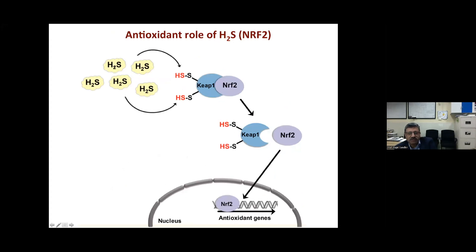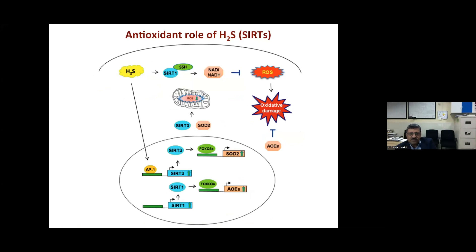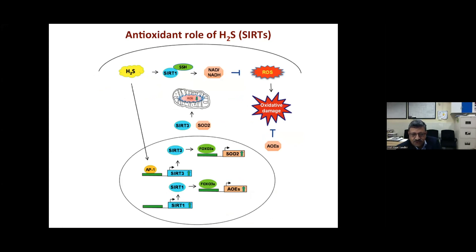H₂S also stimulates sirtuin pathways. Sirtuins are protective, anti-aging molecules. For example, resveratrol in red wine exerts its anti-aging effect by stimulating sirtuin pathways. Similarly, H₂S can stimulate sirtuin pathways, generating superoxide dismutase and other antioxidant genes. Additionally, H₂S can increase NADH — a reducing equivalent — which also helps block reactive oxygen species.